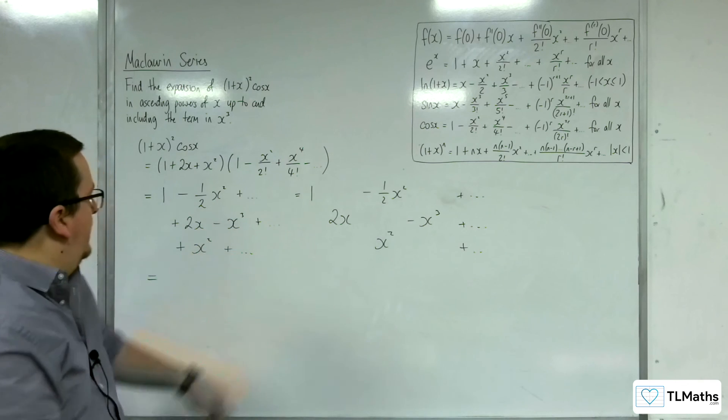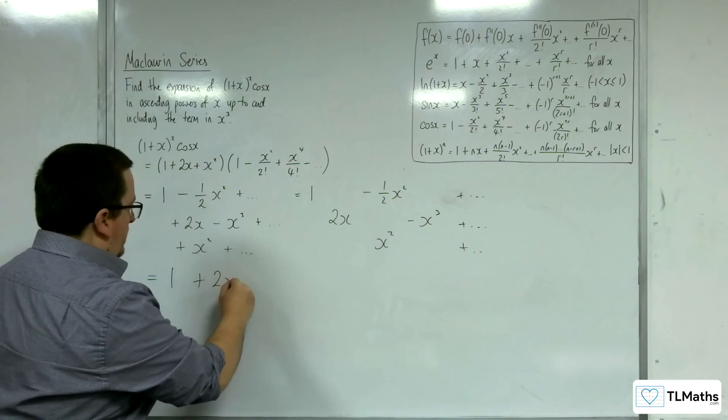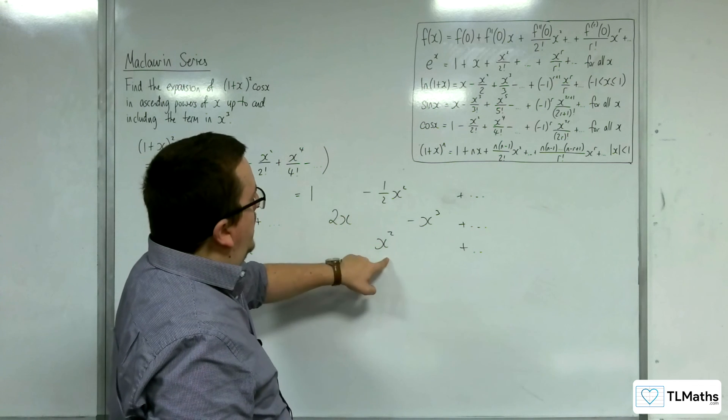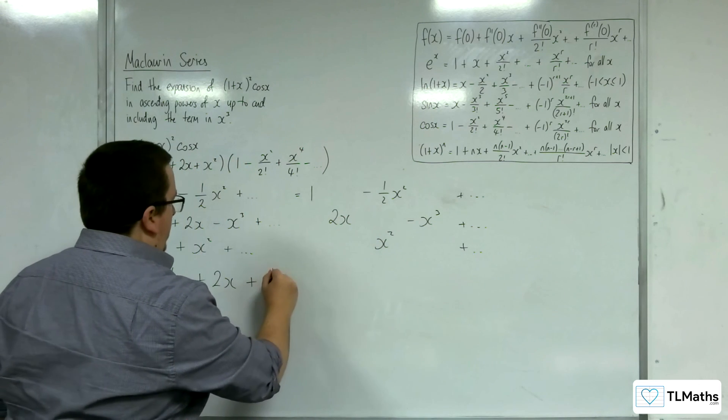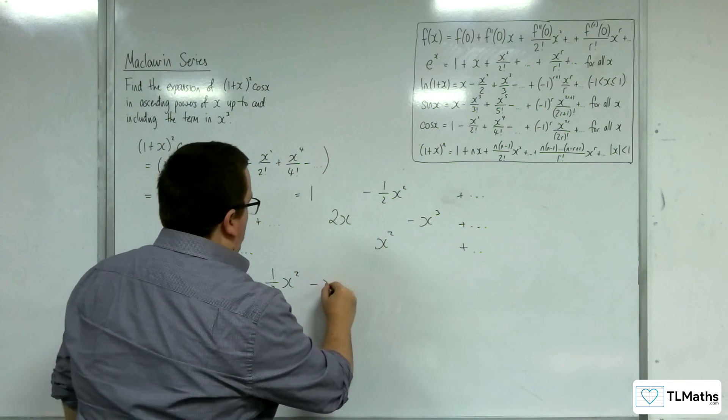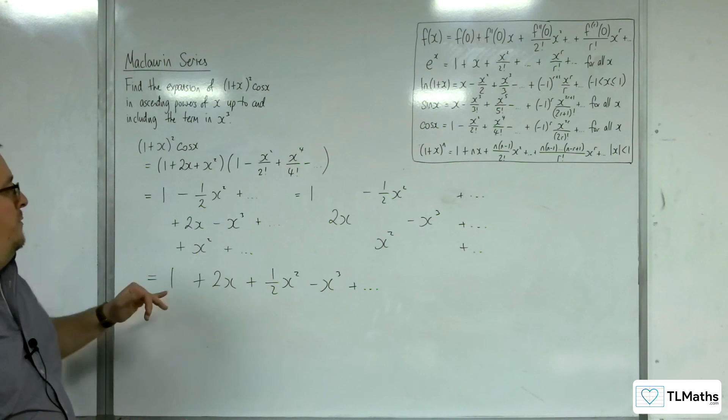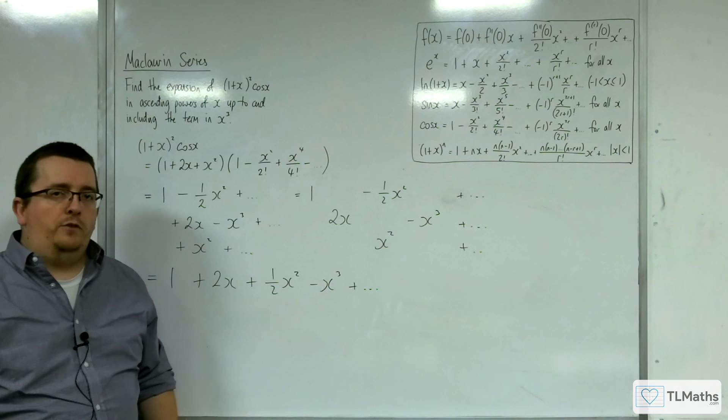And so from there, you can kind of easily see you're going to have 1 plus 2x minus a half x squared plus x squared is plus a half x squared. And then minus x cubed, etc. And so this is the expansion I'm looking for.